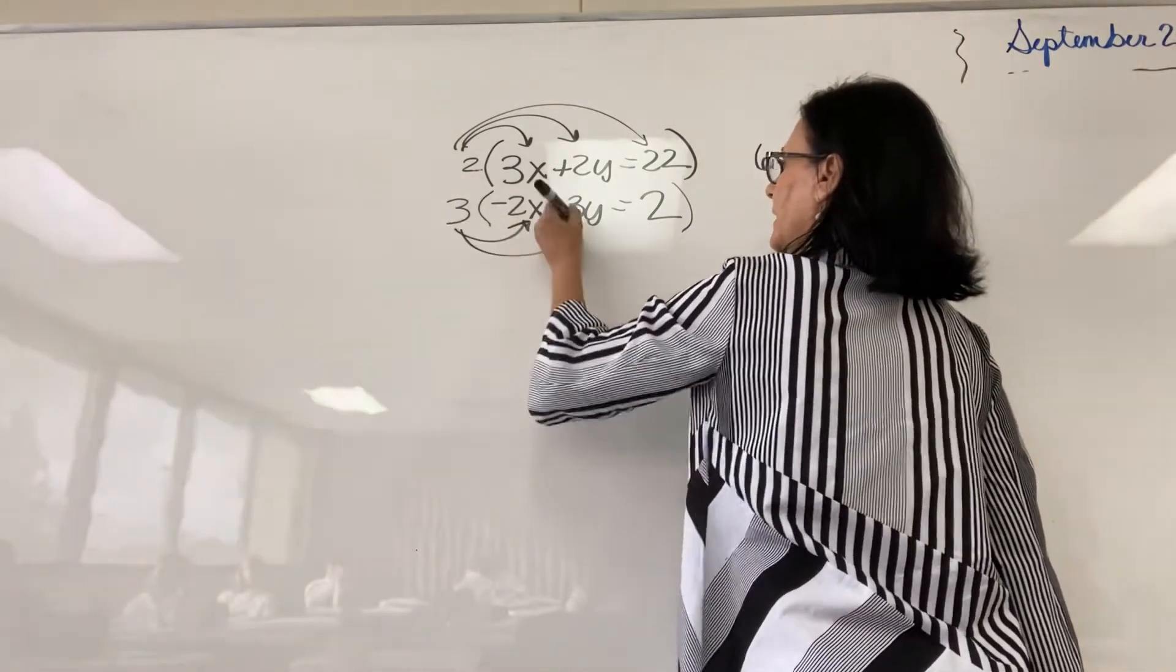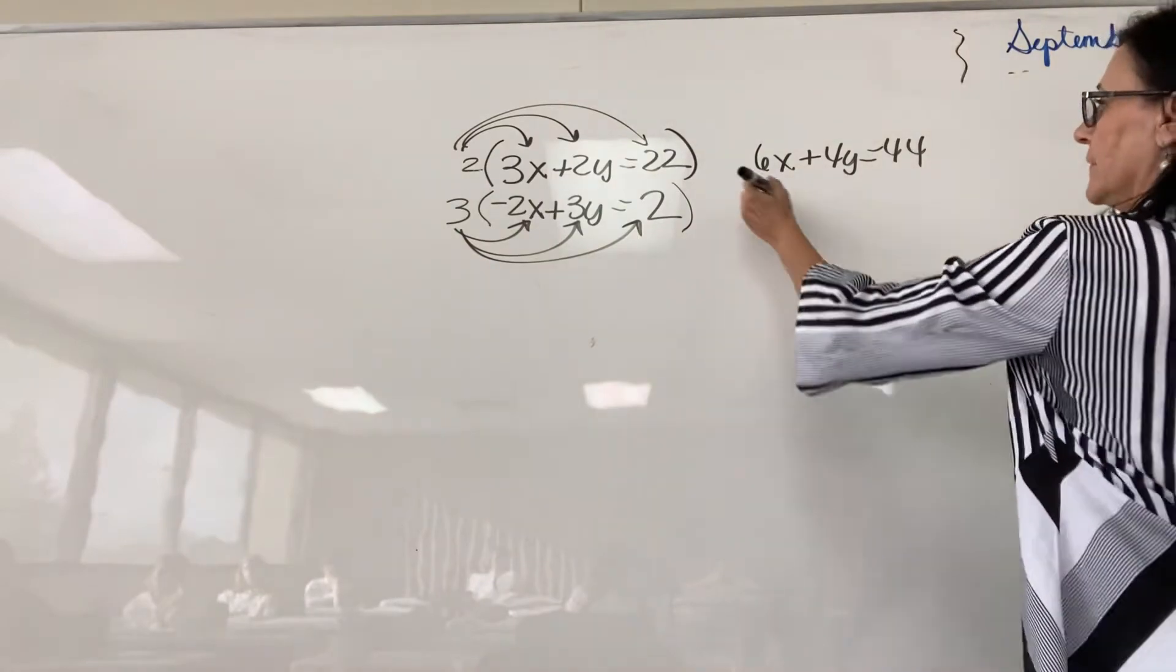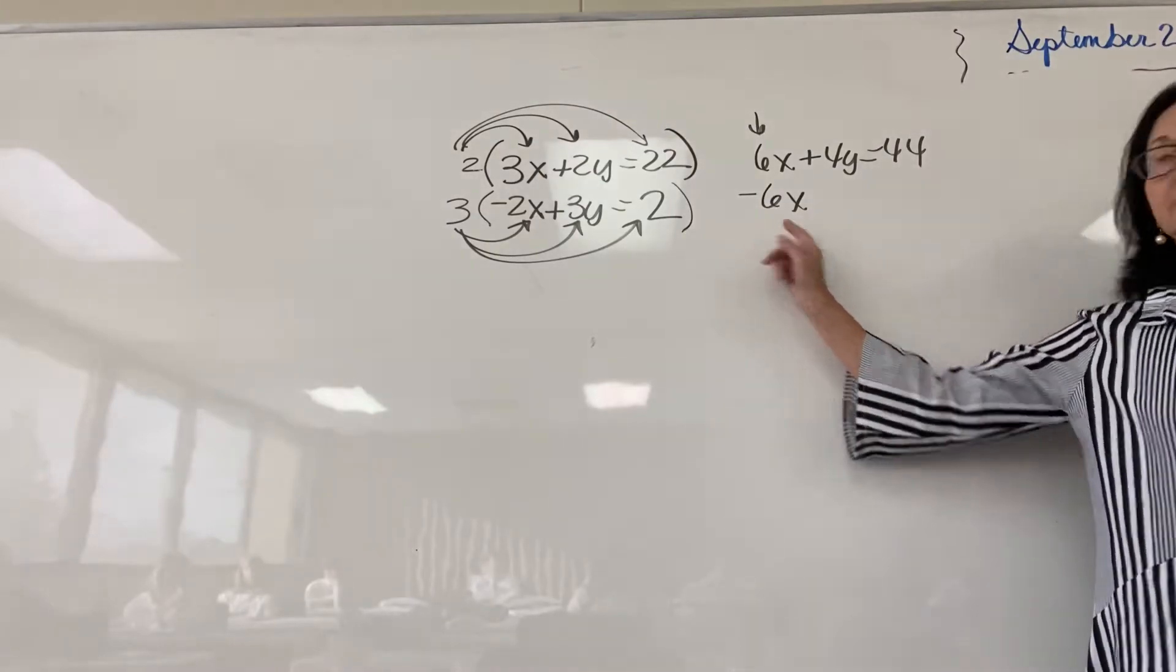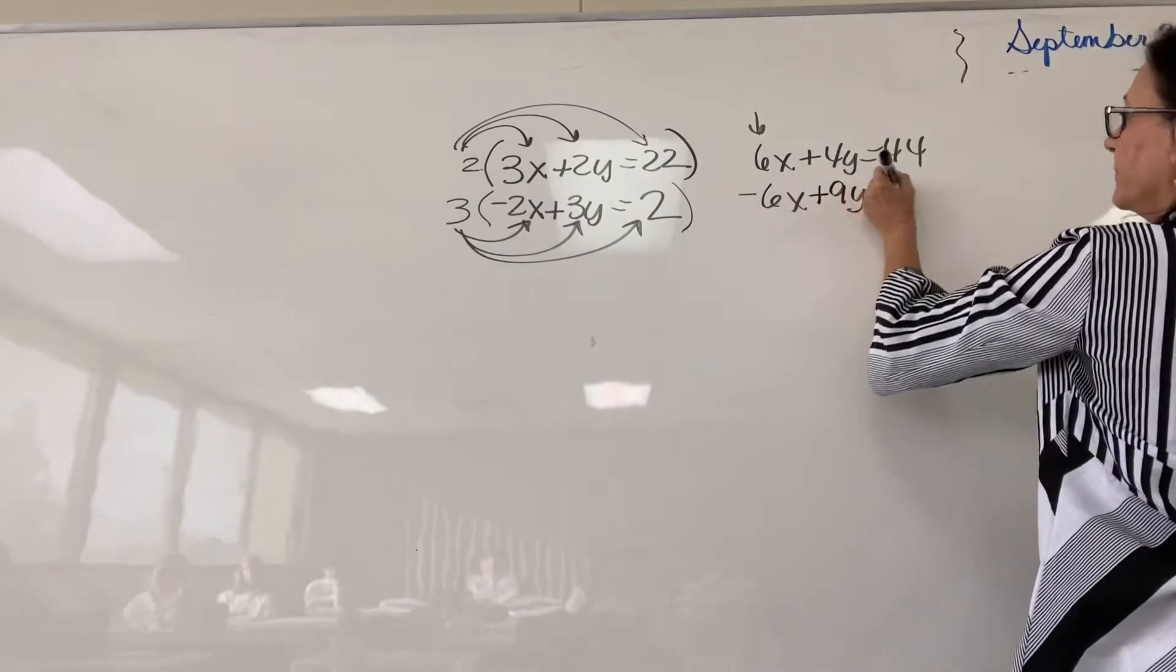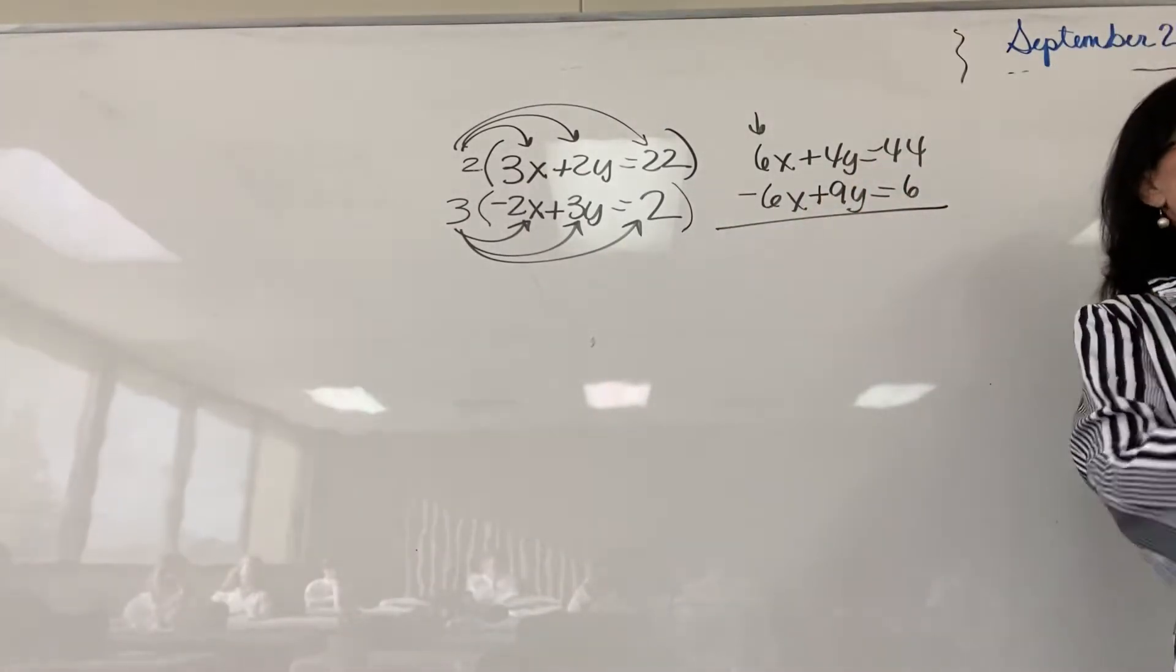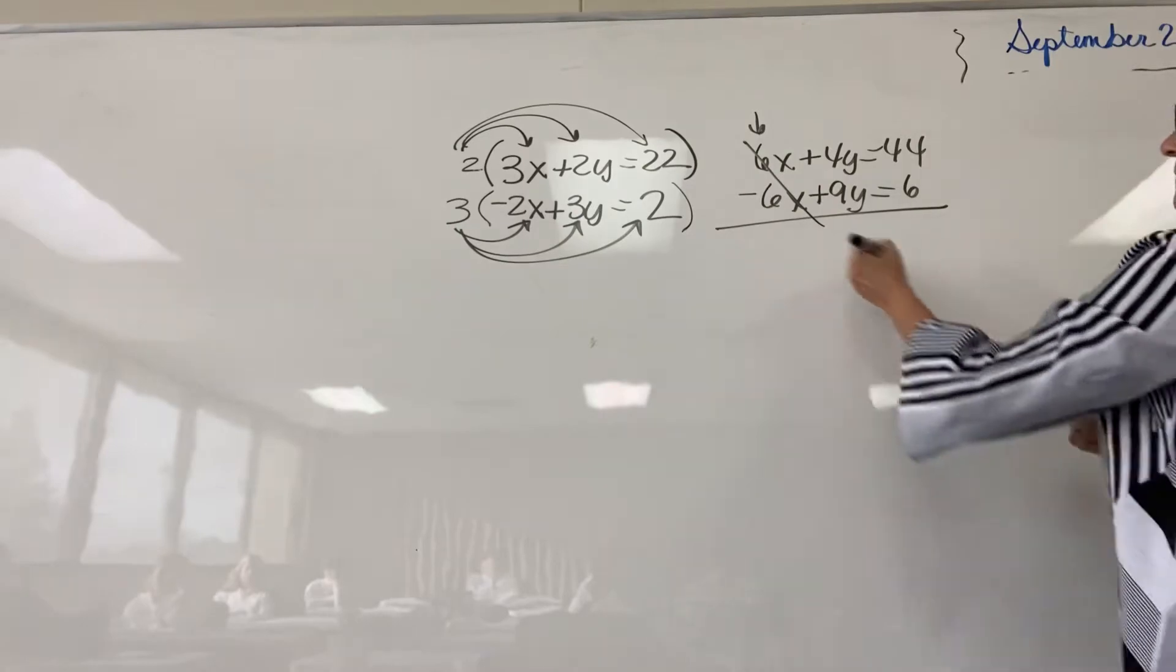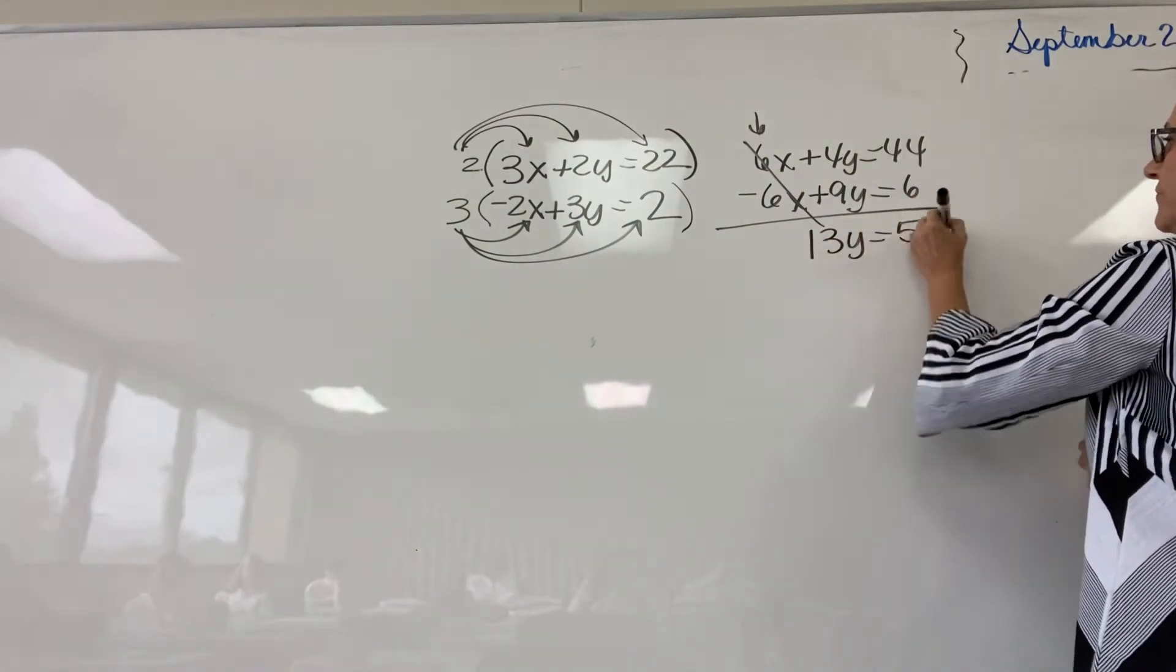Distributing the 3 to every term in the second equation. This is where I wanted to get. Plus and minus 6x. So, that I could then add the equations. And the 6x eliminates. So, I have my 6x eliminating. I have 13y equals 50.